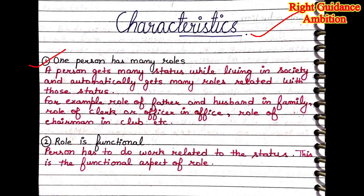A person gets many statuses while living in society. When a person stays in society, he plays many roles and automatically gets many roles related with those statuses. For example, the role of father, husband, and family member at home; the role of clerk, officer, or manager at the office; and the role of chairman or manager in a club. This is the way that a person plays many roles.